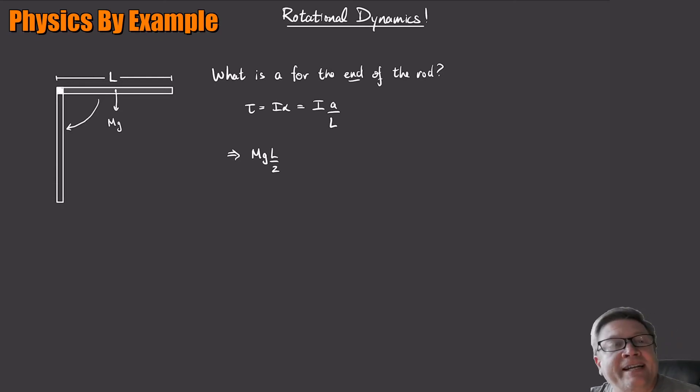And the angle is 90 degrees, right? So sine of 90 is 1, I don't have to worry about that. So this is going to be equal to I. What's the I of the rod? It's going to be one third ML squared. And then I got an A over L.